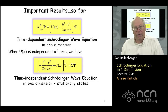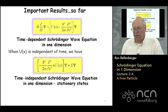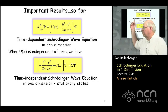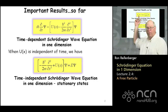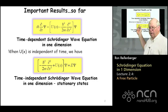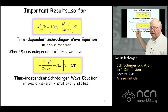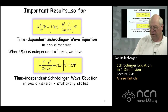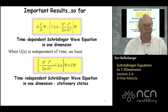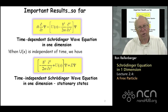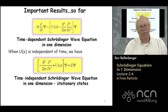What we did last lecture was we had two differential equations. One is referred to as the time-dependent Schrödinger equation — that's the top equation here, and you can see it's got a time derivative associated with it. A much simpler form is the time-independent form of Schrödinger's wave equation. This is usually the equation that we will focus on in this course because we're not going to have a lot of potentials, u of x, that vary with time.